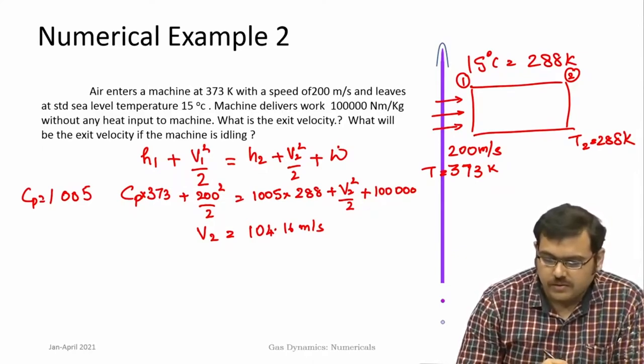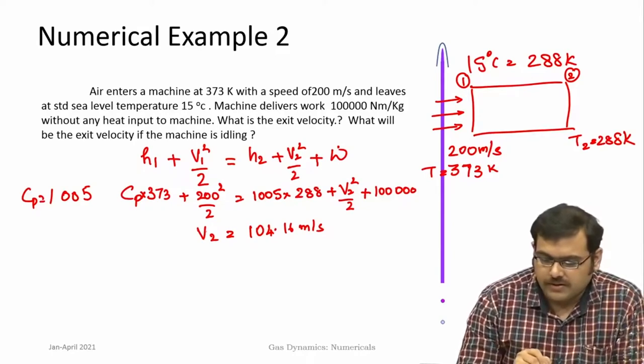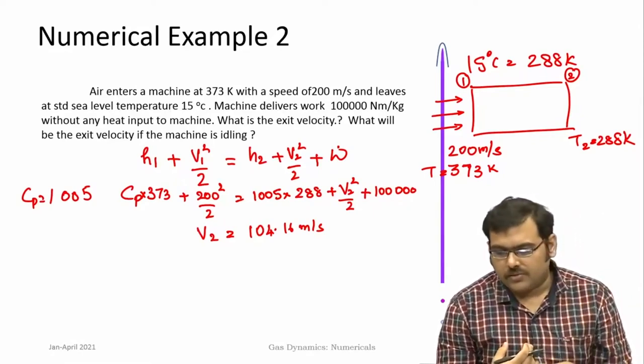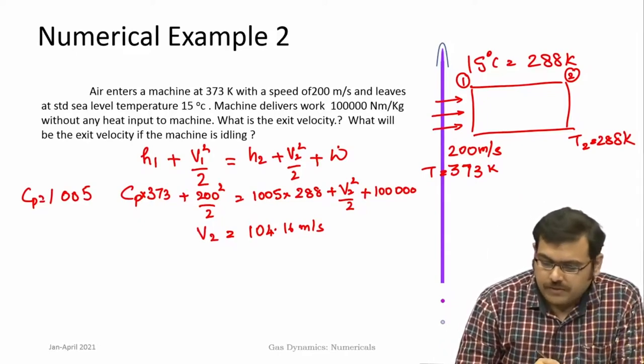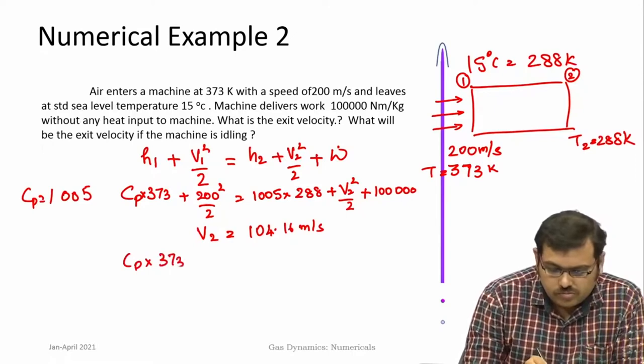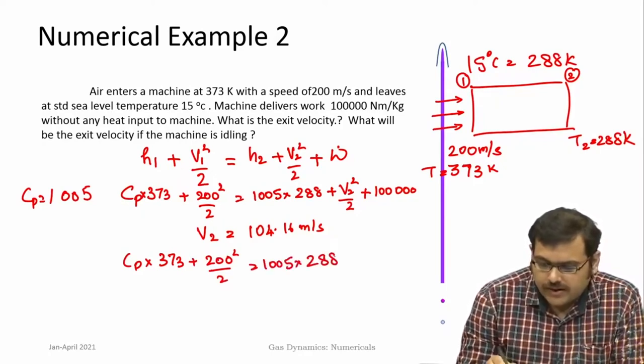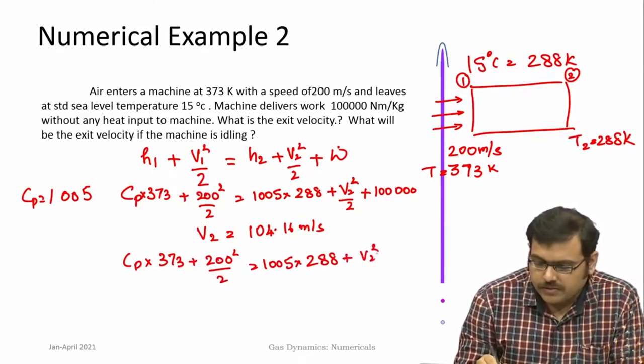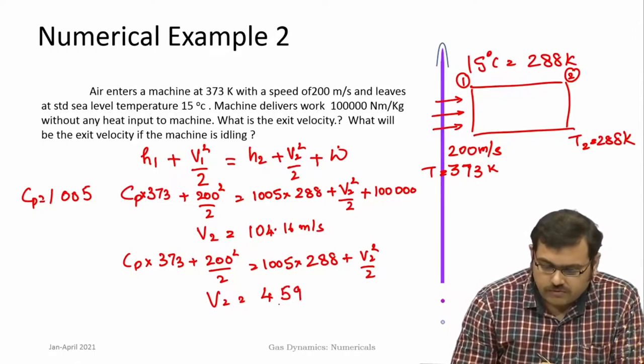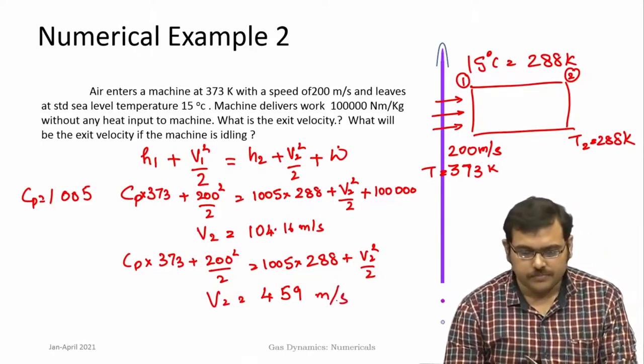Now if it is idling, when there is no work taken out, the equation again still remains the same, which is conservation of energy. Now that no work is being taken out of the machine and if it still continues to exit at the same temperature, then it would have much higher velocities. The velocity can be much higher—around 459 m/s, it will come to around this value.